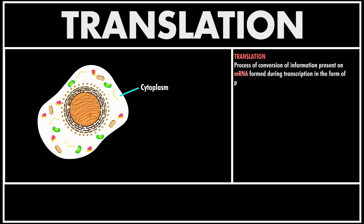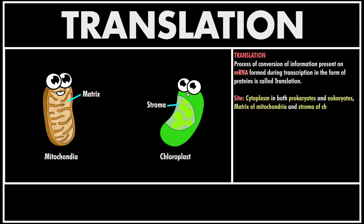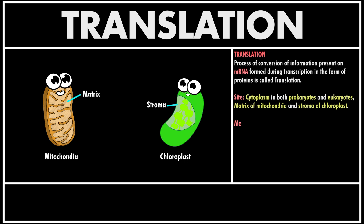This process occurs in the cytoplasm in both prokaryotes as well as eukaryotes, as it requires ribosomes which are found in the cytoplasm, also observed in the matrix of mitochondria as well as the stroma of chloroplast.